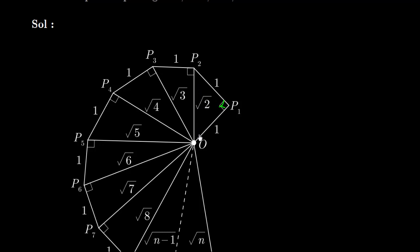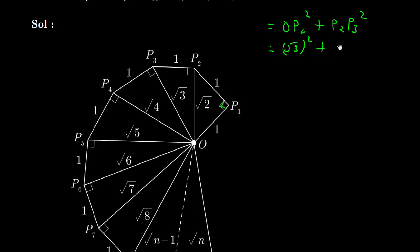Now this √2 distance becomes the base, from O to P2. From P2, draw a perpendicular and connect to P3. So OP3 equals √3. We can verify: OP2² + P2P3² = (√2)² + 1² = 2 + 1 = 3, so OP3 = √3. Continuing, OP3 becomes the base to P3, and from P3 we get OP4 = √4.